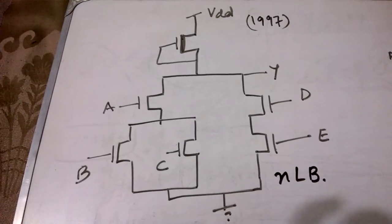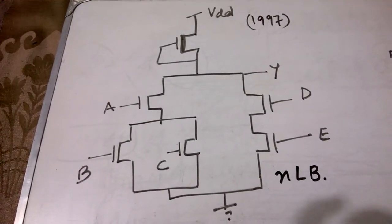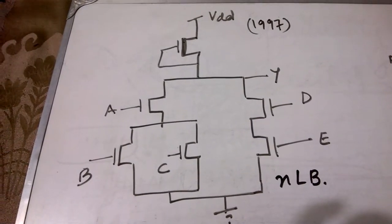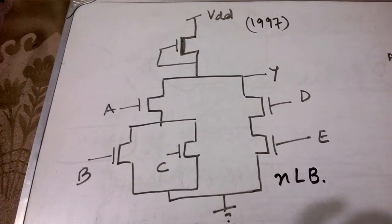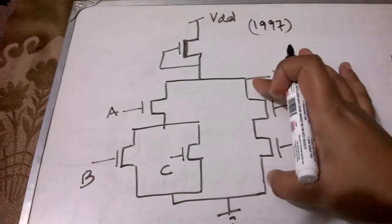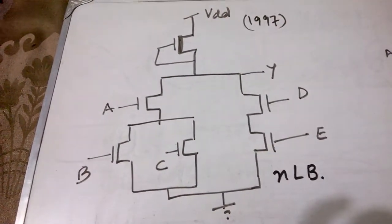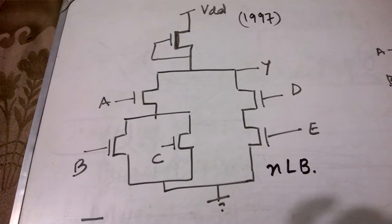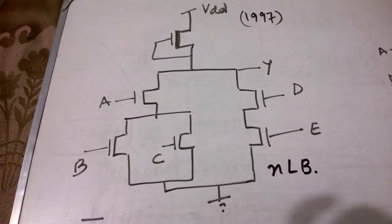A is in series with this combination so a dot will be inserted here. Then we write D and E are in series so D dot E will be written. This whole combination is in parallel to this whole combination so we insert a plus in between.